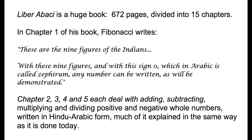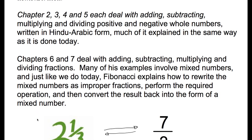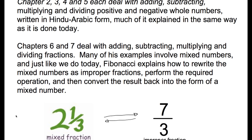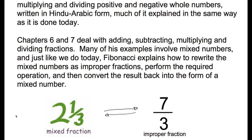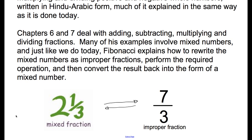He goes through chapters two, three, four, and five, dealing with how to add, subtract, multiply, and divide with positive and negative whole numbers written in Hindu-Arabic numbers — doing this for the benefit of people who were writing with Roman numerals, and explaining it much the same way it would be done today. Chapters six and seven deal with adding, subtracting, multiplying, and dividing with fractions. Many examples involve mixed numbers, and just as we do today, Fibonacci explains how to rewrite the mixed number as an improper fraction, perform the required operations, and then convert back.